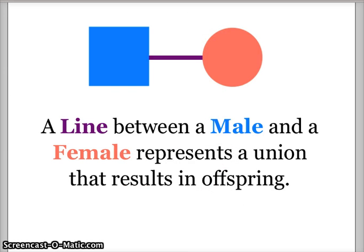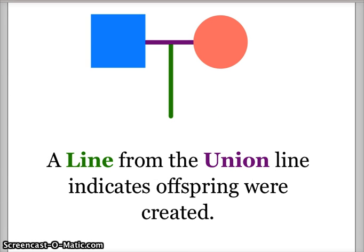If we place a line between a male and a female, that represents a union that will result in offspring. A line connecting a male to a female shows that they will be having offspring. If a line comes off of that union line, that indicates that offspring were created. This green line represents the fact that this male and this female mated and an offspring was conceived.